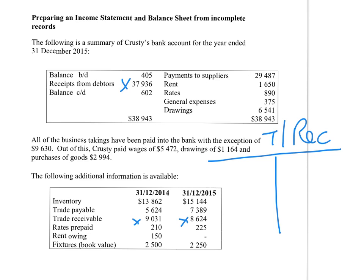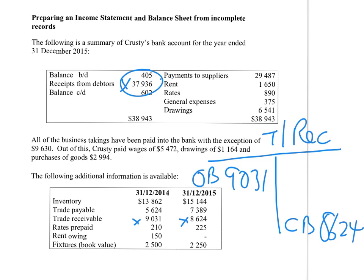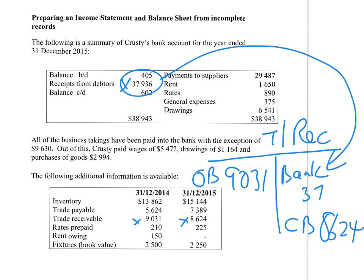It is an asset account with the opening balance of 9,031 on the debit side and the closing balance of 8,624 on the credit side. The receipts from debtors figure appears on the credit side of this account — because when money is received from trade receivables, the asset decreases, hence the credit entry. So that figure is labelled bank, with a value of 37,936 on the credit side.